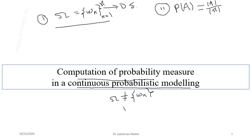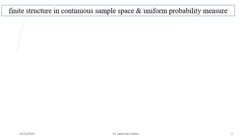That scenario means the sample space is containing an interval or union of intervals. We talk about a continuum of points — points occurring in a continuum manner with no gap. So simply we call it an interval; some kind of interval would be there inside the sample space. This is the meaning of a continuous sample space, and then we need to compute the probability measure.